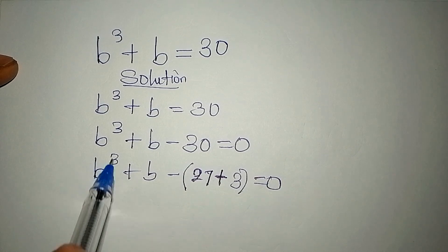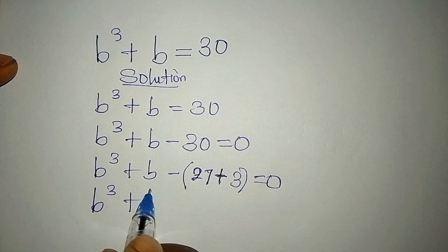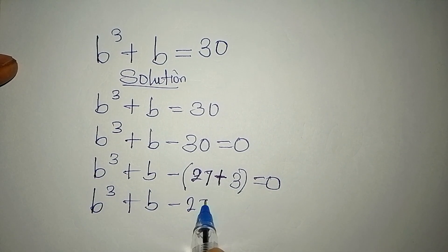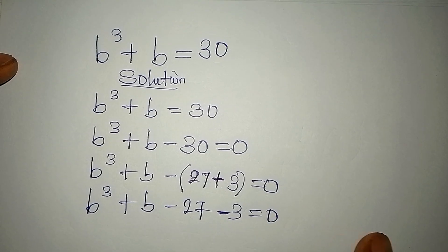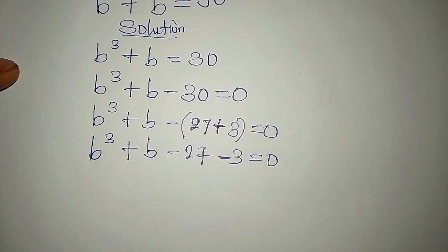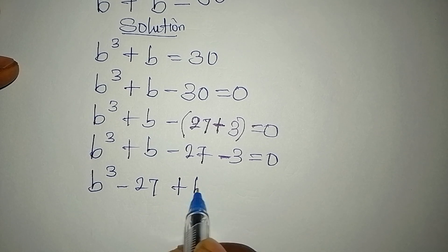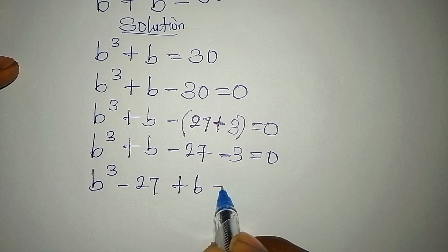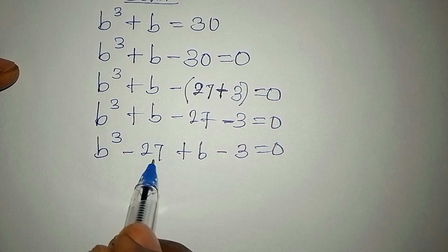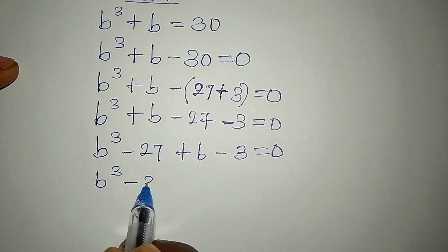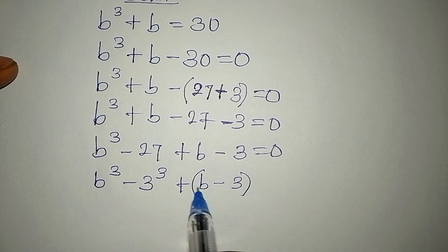This is because 27 is 3 to the power of 3. So b³ + b becomes negative 27 and negative 3. Rearranging, we have b³ minus 27 plus b minus 3 equals zero. Note that 27 is written as 3³, giving us (b³ - 3³) + (b - 3) = 0.